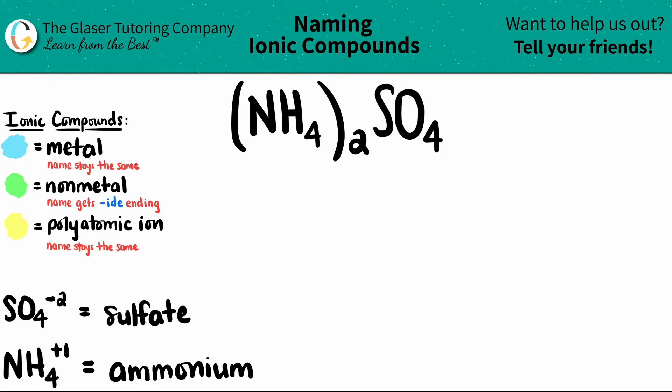I have a polyatomic here, NH4. We need to memorize these polyatomics because they're not on the periodic table. NH4, which always has a +1 charge, is called ammonium.